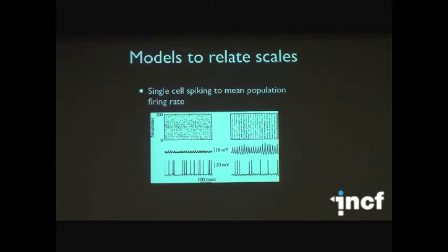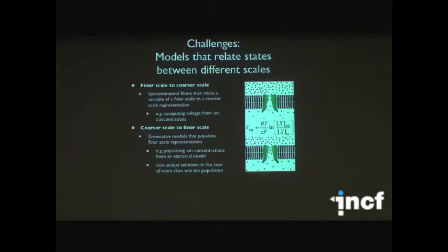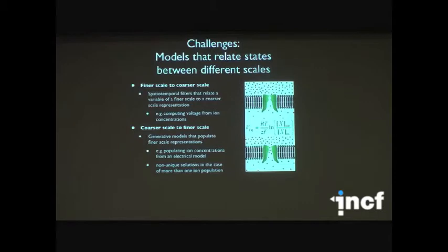Generally it's fairly straightforward to move from fine-scale to coarse-scale because you're compressing information — you lose detail. The problem comes when you want to initialize a fine-scale model from a coarse-scale model. If you take a voltage and want to populate a detailed model with ions, it's a non-trivial problem with no unique solution, and you need additional constraints to determine how to do that. These are real challenges facing multi-scale modeling.